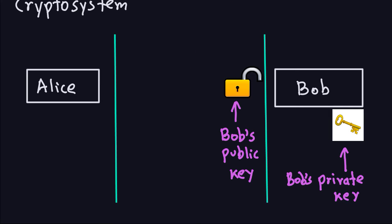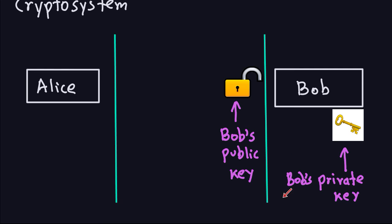If Alice wants to communicate with Bob, Bob will have two keys. One is called the public key, which can be seen by anyone and is used to encrypt messages sent to Bob. The other is Bob's private key, which is only known to Bob. If Alice wants to send a message to Bob, she grabs Bob's public key and encrypts the message using it.